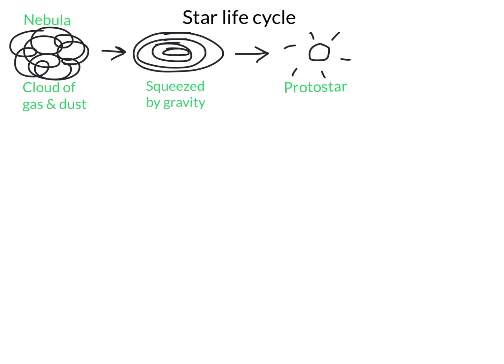Proto in Greek means first, so we're just about to the point where we call this star a true star. Star birth is considered to occur when nuclear fusion begins. This nuclear fusion is what happens when four individual hydrogen atoms get crammed together so quickly under immense heat and pressure that they actually become helium atoms. This process occurs in every single star, no matter what. Now we're going to begin to diverge a little bit and have a couple of different patterns depending on the size of the star.